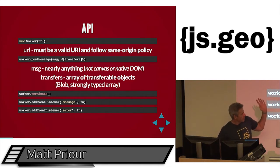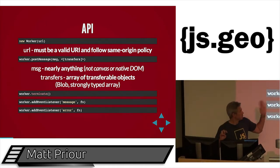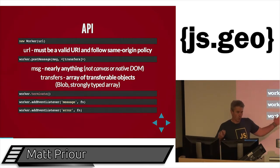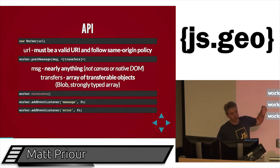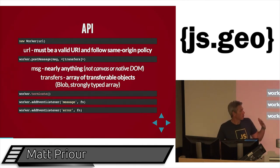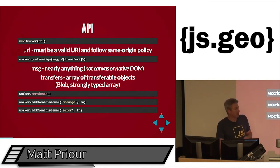It has to be a valid URL, and it has to follow the same origin policy — which is irrespective of where that script is being hosted and whether it implements CORS or not, because when you create it, it doesn't care about CORS. When you import scripts into a worker, it does care about CORS. Even if your server's responding with CORS headers, the browser doesn't care when creating the worker. That was something interesting I found out.